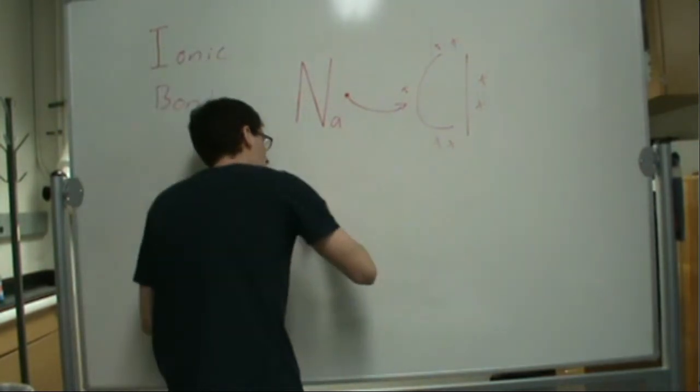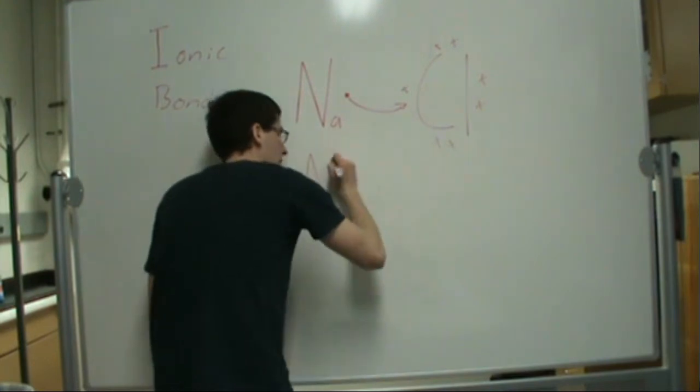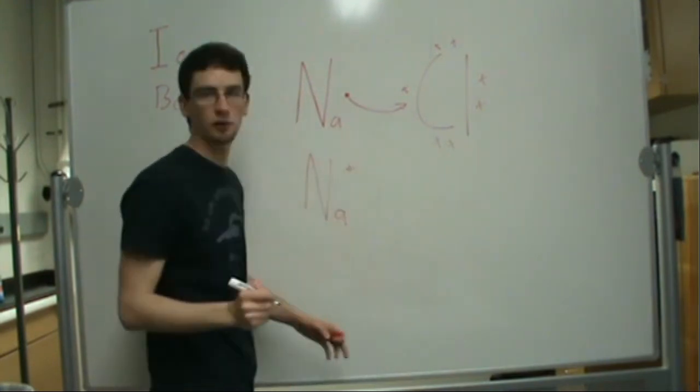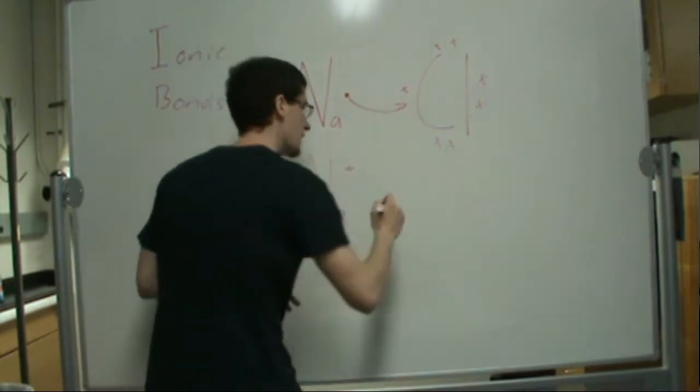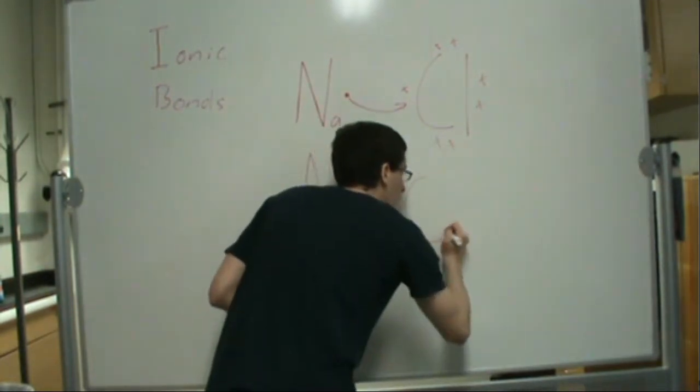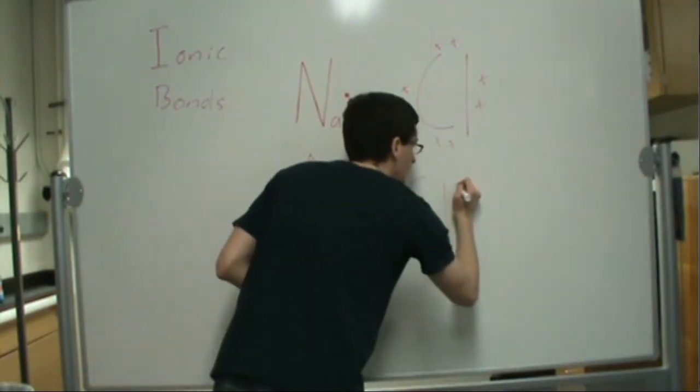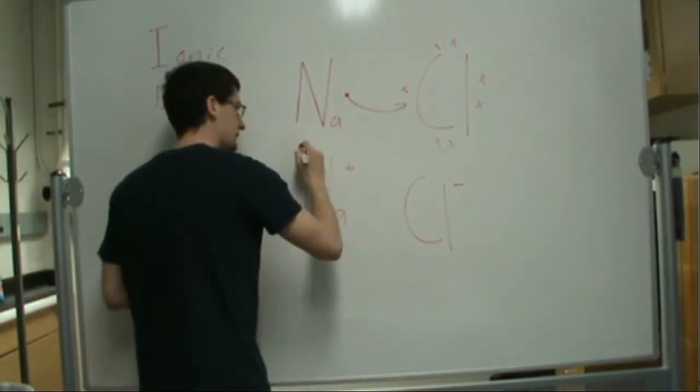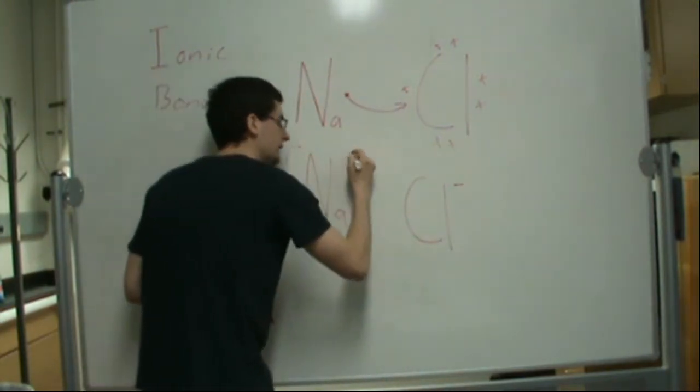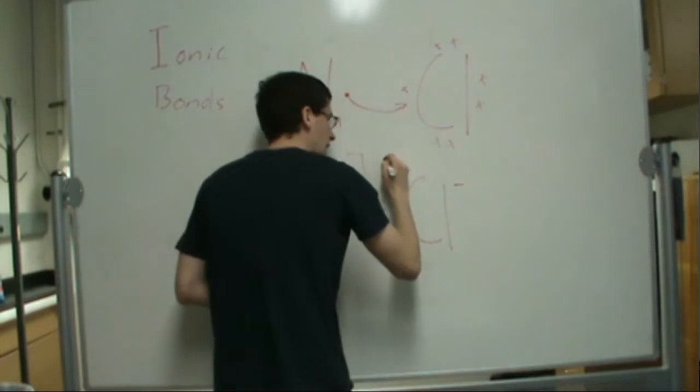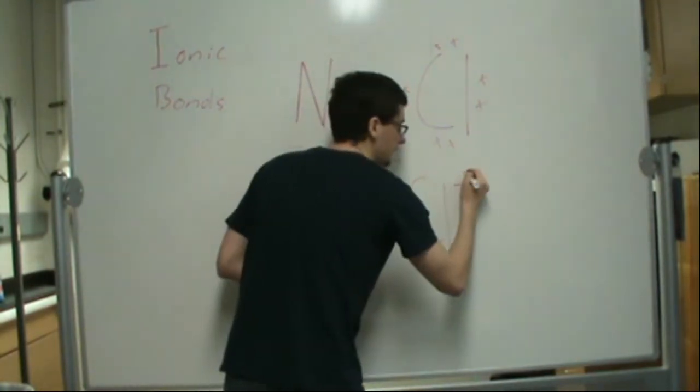negative, which is our anion. Oftentimes these are drawn with brackets around them, and most of the time these compounds are solids at room temperature and pressure.